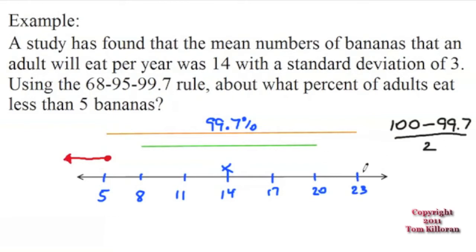And we're going to get 0.15%. Don't change that to 15%. It's actually just 0.15%. So a very, very small percentage of adults will eat less than 5 bananas per year based on this study. And that's it.